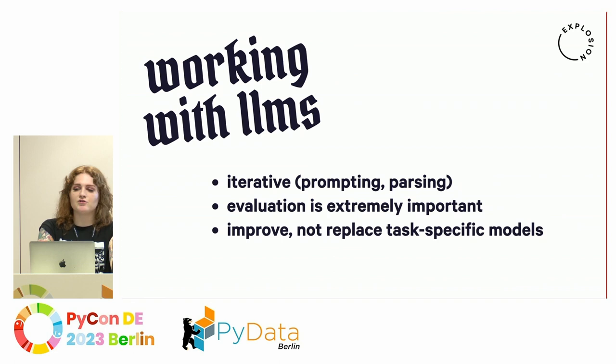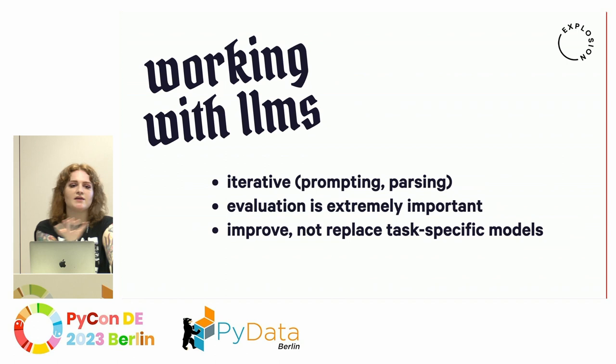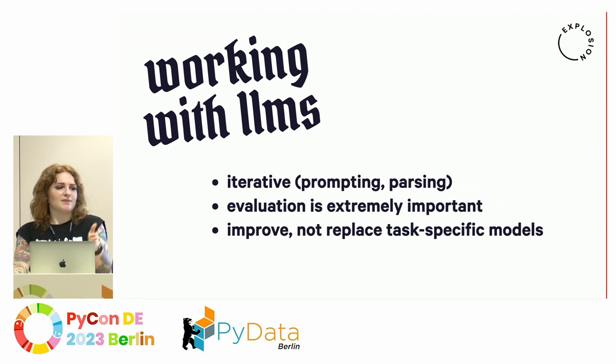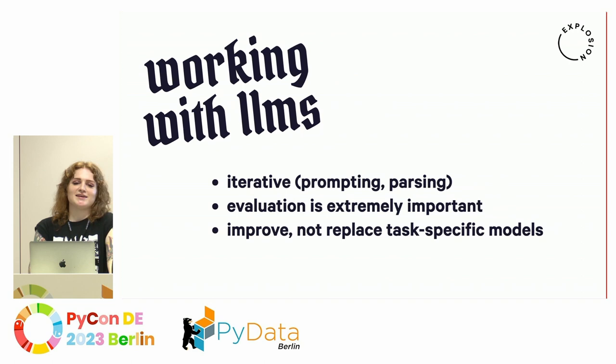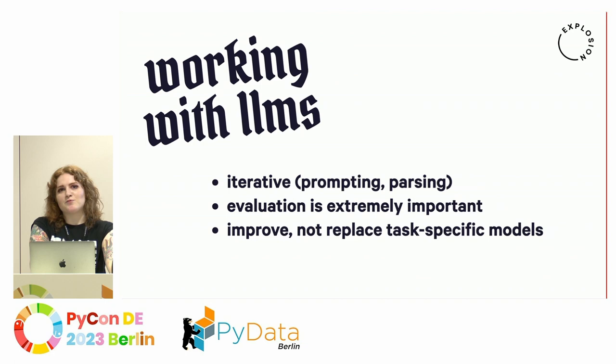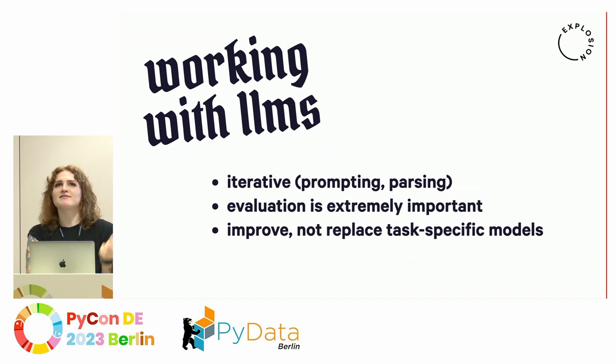In a lot of real-world use cases, the goal isn't to replace task-specific models with one LLM that does everything. The most promising path is to use LLMs to improve task-specific models and get to something that does exactly what you want much faster than before. Several papers comparing GPT models to more task-specific models on benchmark datasets show that training something for a specific purpose still gives significantly better results — which makes a lot of sense.